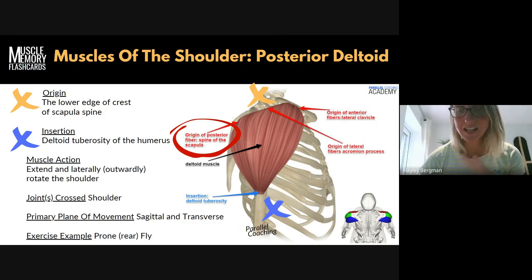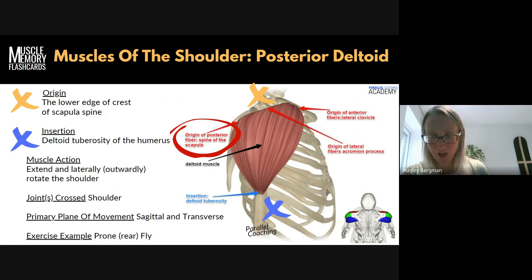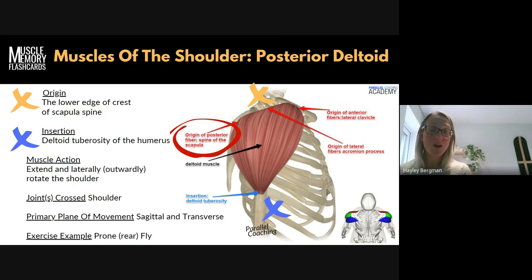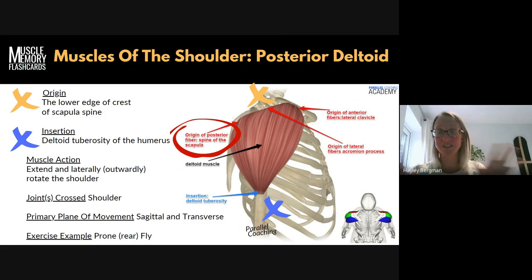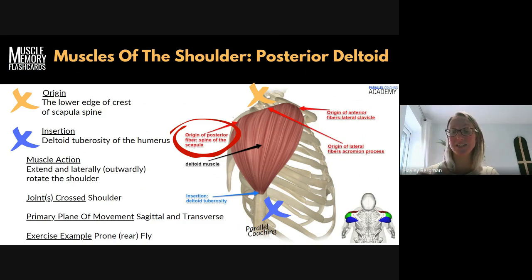A good exercise for the posterior deltoid is the rear fly or prone fly. Hold dumbbells and lean all the way forward into a tabletop position with your back flat, then perform a fly motion. The more flat your back is, the more you're working against gravity to get extension through the shoulder and that lateral rotation outwards. You'll notice other actions from the trapezius and rhomboid as the scapula moves back, but looking just at the shoulder, you're getting that extension backwards. That's your posterior deltoid.